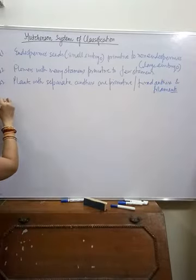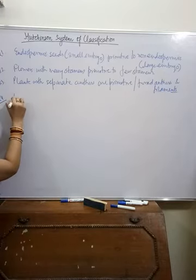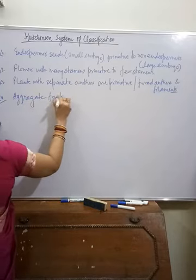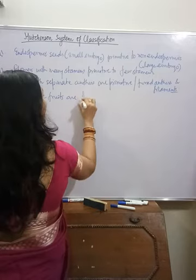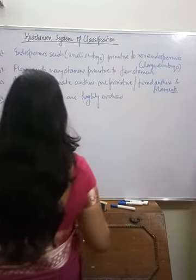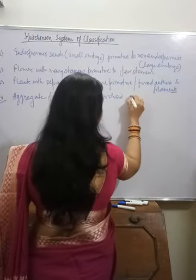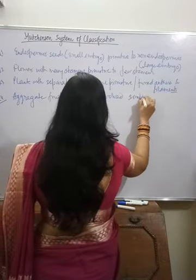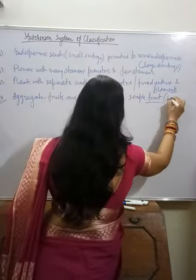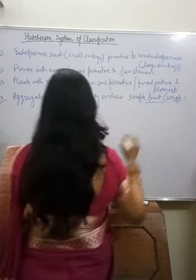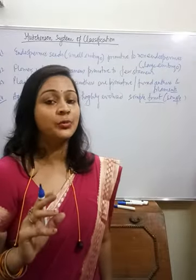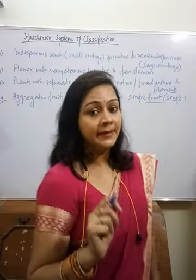The last and twenty-fourth principle is about fruits: aggregate fruits are highly evolved compared to simple or single fruits. These were the 24 principles that Hutchinson described.